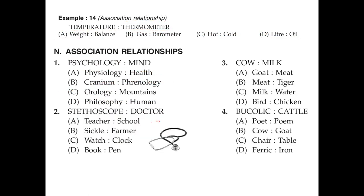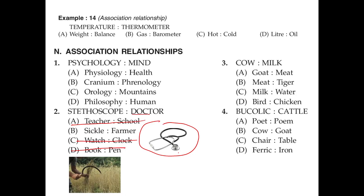Stethoscope and doctor: a stethoscope is the tool the doctor uses, similar to a person-and-tool relationship. Make sure the person is on the right side. A farmer is a person — cloth is not a person, pen is not a person. A farmer uses a sickle. So farmer and sickle is the right answer.